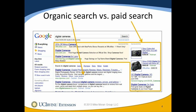Let's start with understanding how organic search works versus paid search. When you type in a keyword such as digital cameras, as was seen here, you see two different kinds of search results. You see the kind in the orange box, which are the paid search results. You also see the results in that middle column in the lower part of the page, which are known as the organic search results. Keyword is what we call the words typed into the search box — in this case, digital cameras.